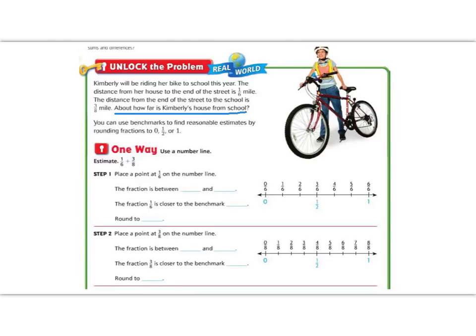We know that from her house to the end of the street is 1/6, and from the end of the street to school is 3/8. So we are going to be adding 1/6 plus 3/8, and you can see they have uncommon denominators. But today we're just going to be estimating, and the word 'about' confirms that.